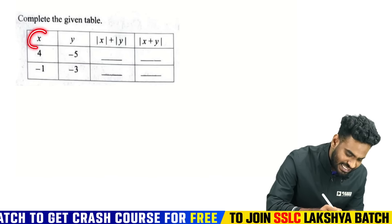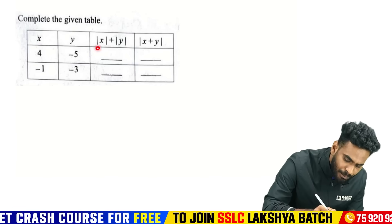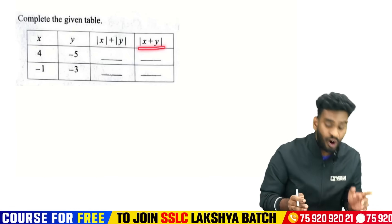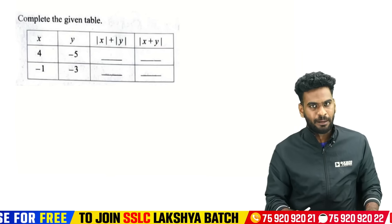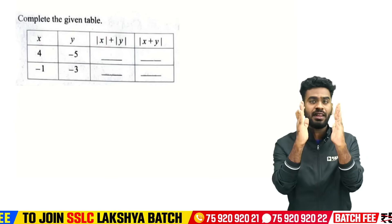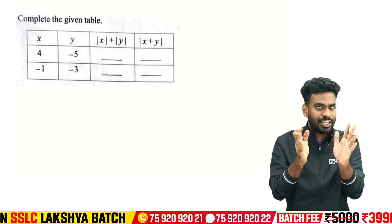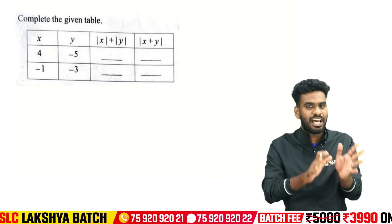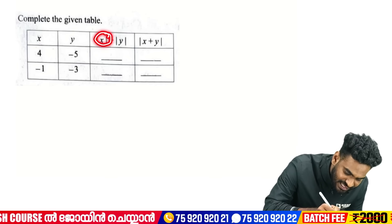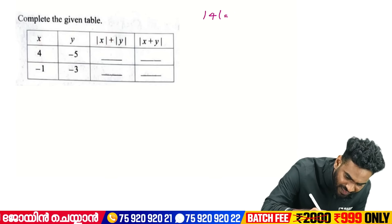This is the first question. X and Y are numbers. What is mod X plus mod Y? And what is mod of X plus Y? Let's check. Mod X means absolute value — whether the number is negative or positive, we answer positive. So mod X is 4.